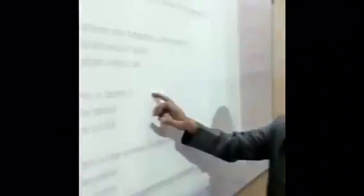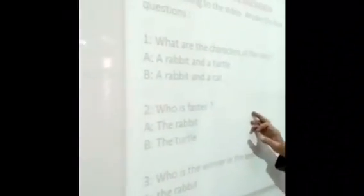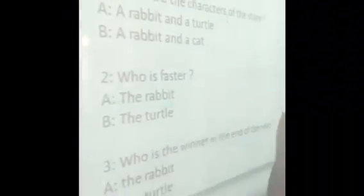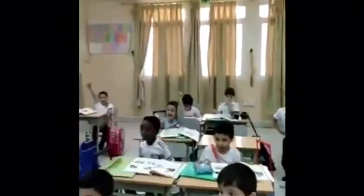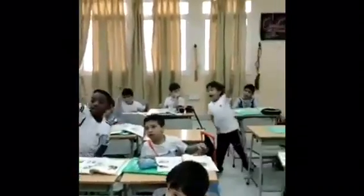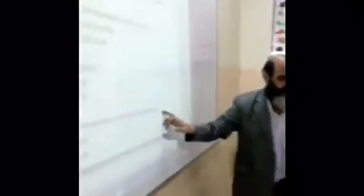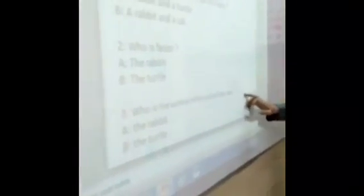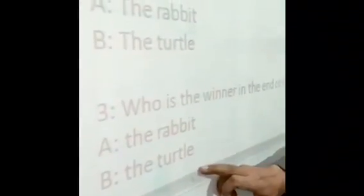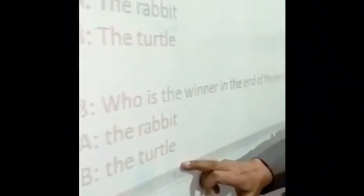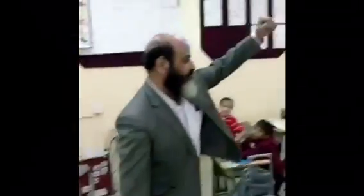Who is faster in reality — the rabbit or the turtle? A or B? A, very good. Who is the winner at the end of the race? A rabbit or the turtle? A or B? A, very good. Thank you very much.